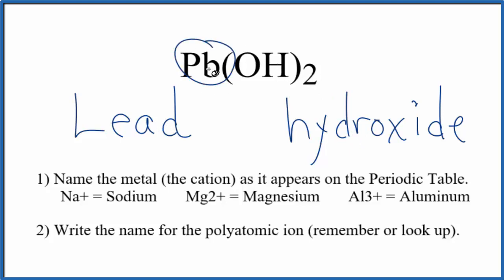We said lead is a transition metal, so we need to figure the charge out for Pb and write that in the name. We know the hydroxide ion is one minus. We have two of them, so two times one minus, that's two minus. The lead has to be two plus.